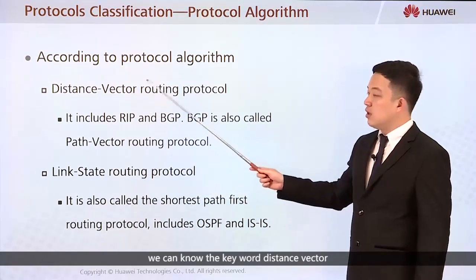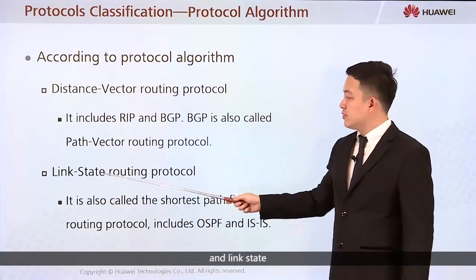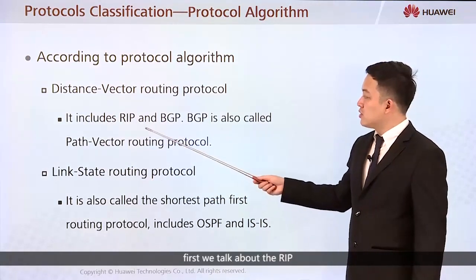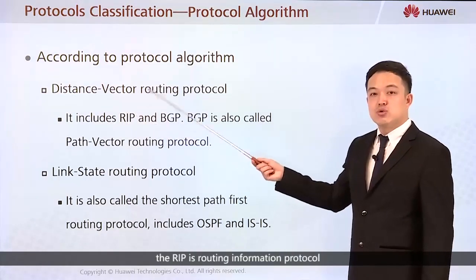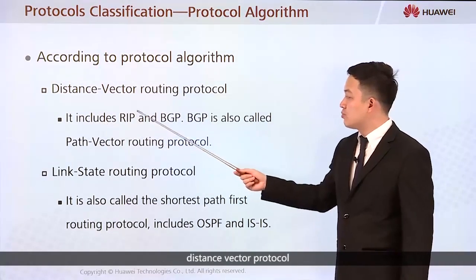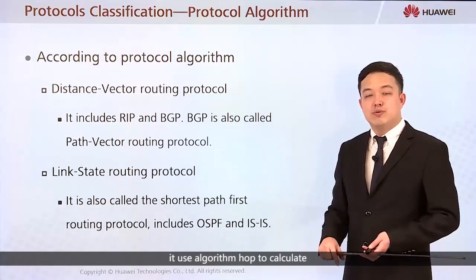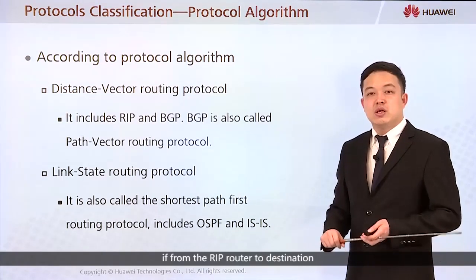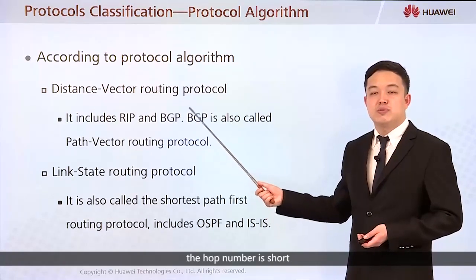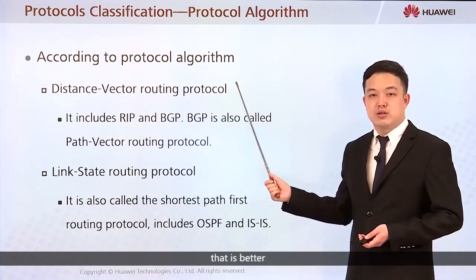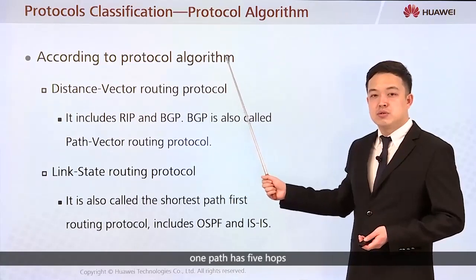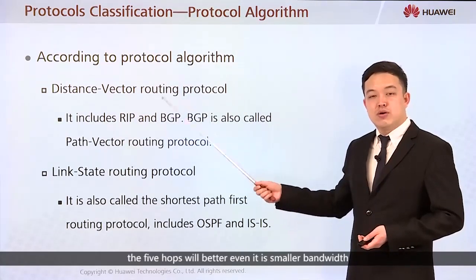From the name, we can identify the keywords: Distance Vector and Link State. We need to know exactly what the difference is. First, let's talk about RIP — the Routing Information Protocol. It is a typical distance vector protocol. It uses hop count as the algorithm to calculate the best path. If the hop number from the RIP router to the destination is shorter, that is better. For example, one path has five hops, another has ten hops — the five-hop path will be selected.